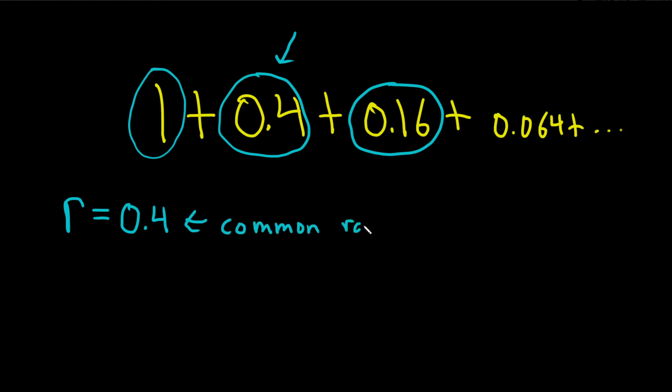So you always want to look for this magical number that you can use to get each of the terms. Most of the time you'll be able to find it, especially if this is a problem you're doing for a class or something. Usually these are oftentimes geometric. So this is a geometric series because we have a common ratio.